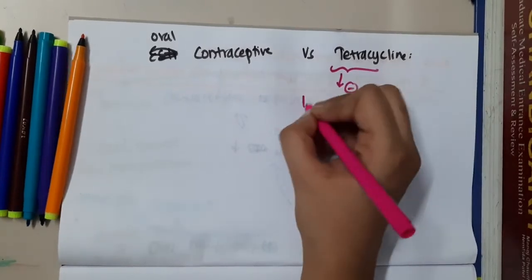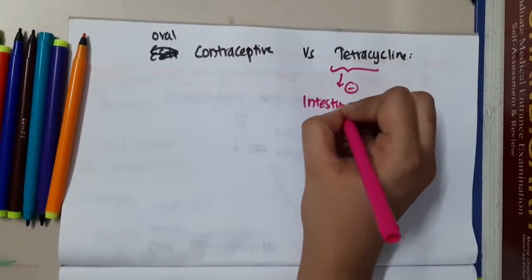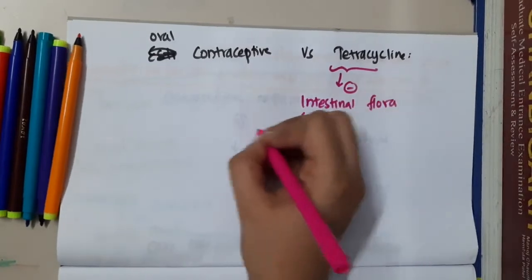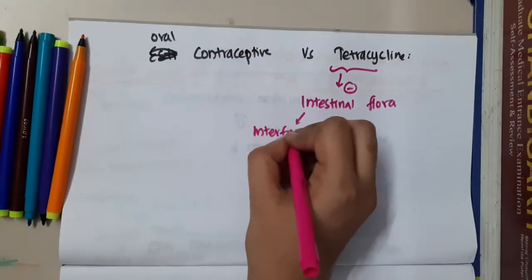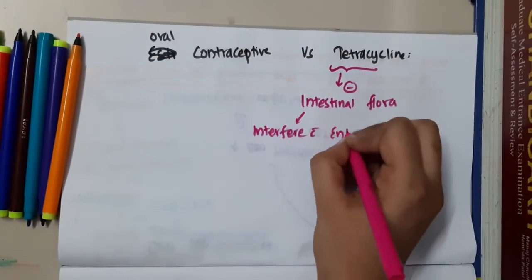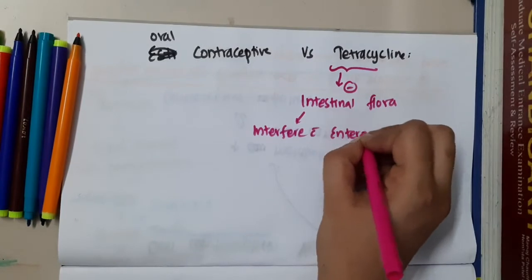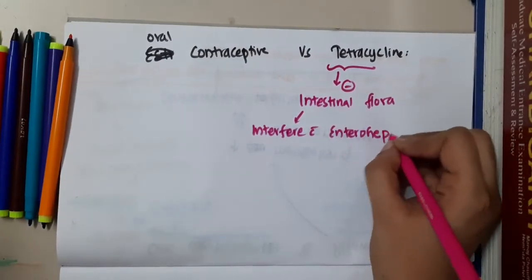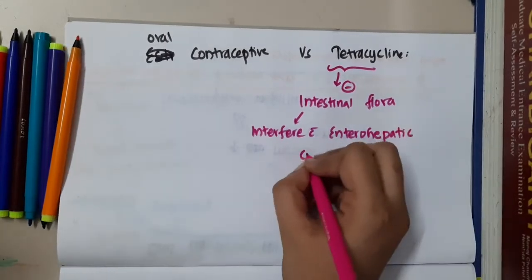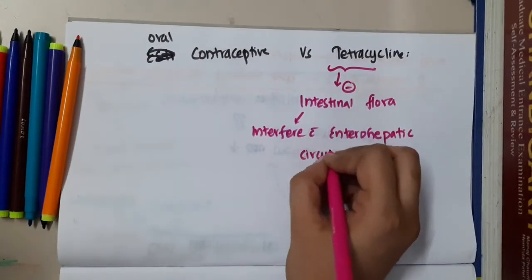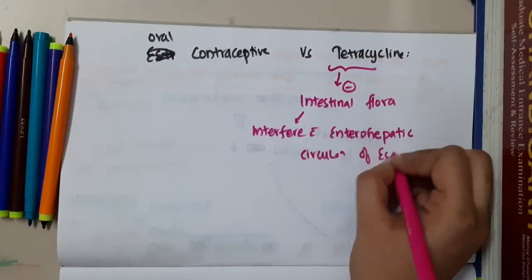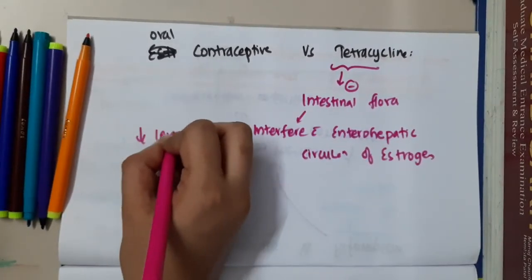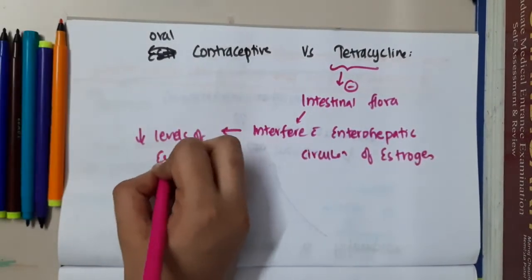Tetracycline will suppress the intestinal flora. Because it will suppress the intestinal flora, it will interfere with the enterohepatic circulation of estrogen. And as a result, this will lead to decreased levels of estrogen.